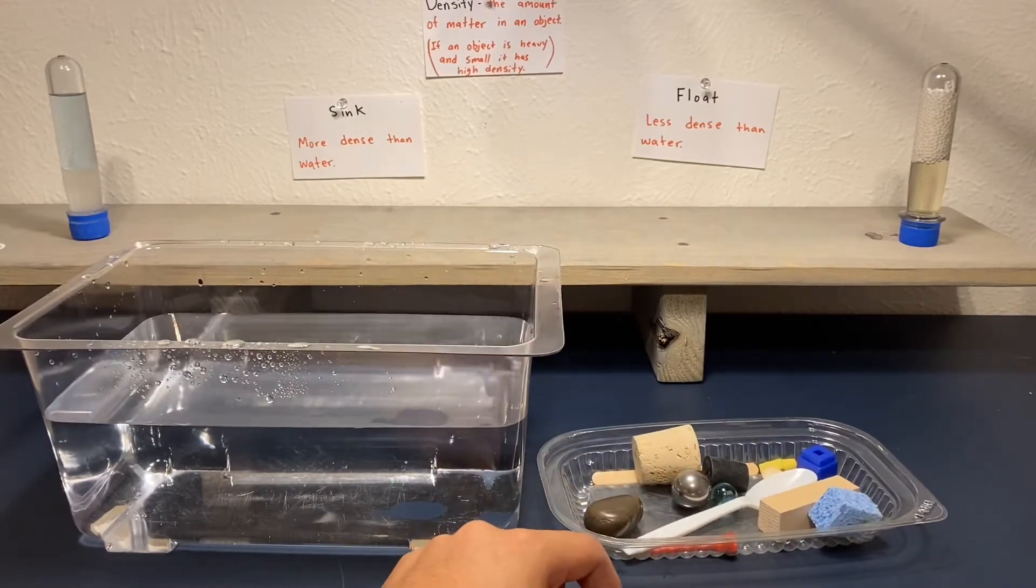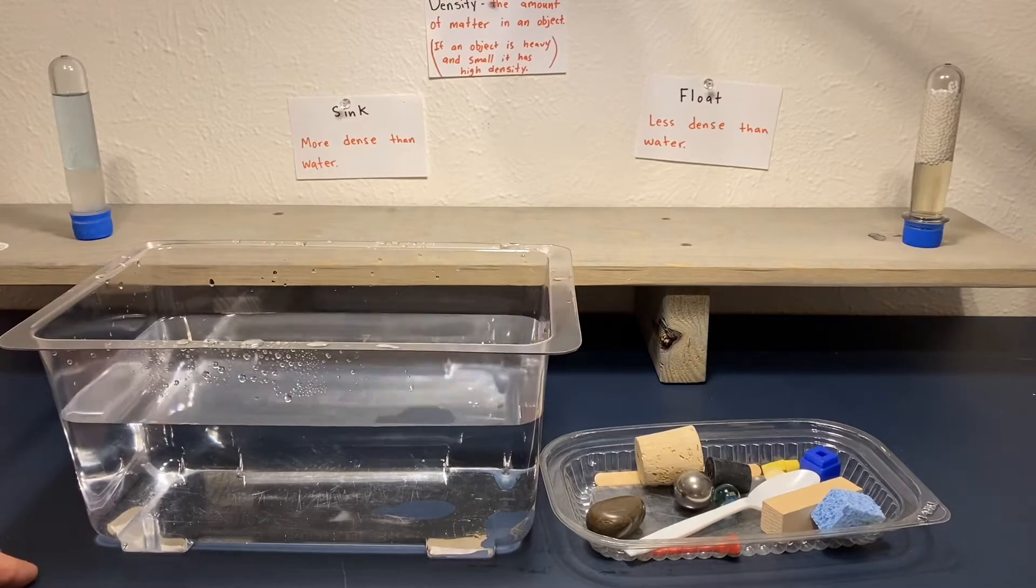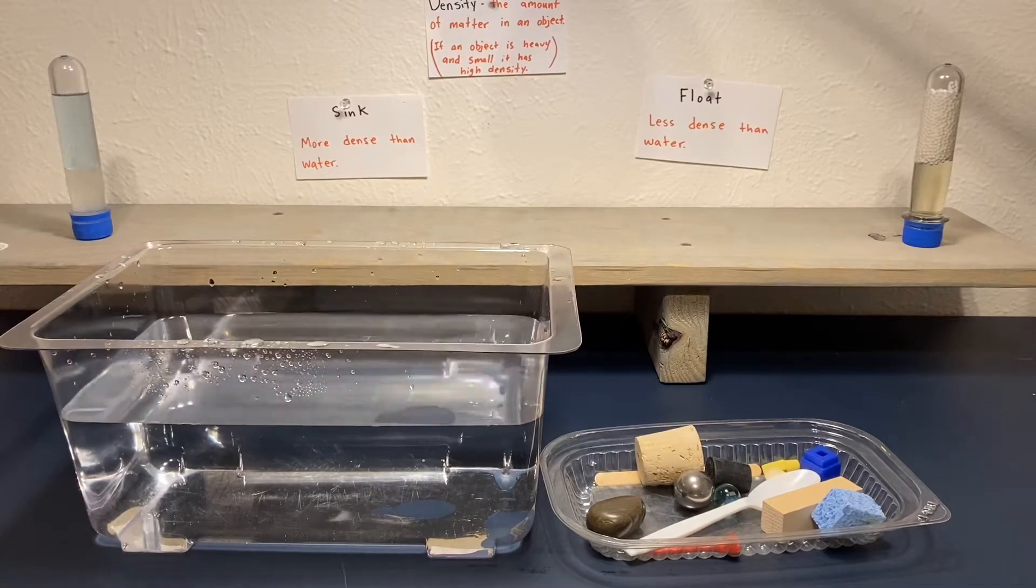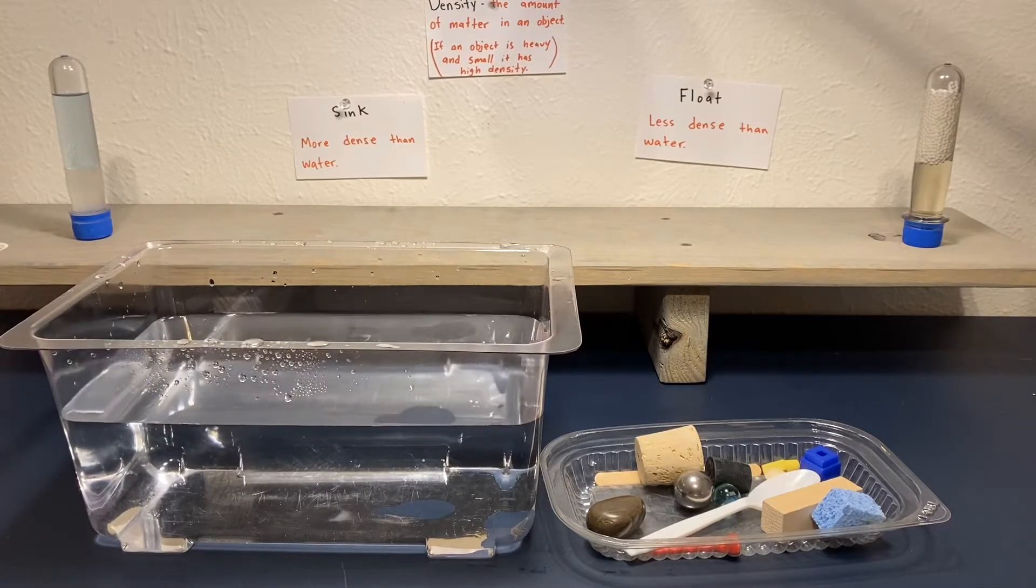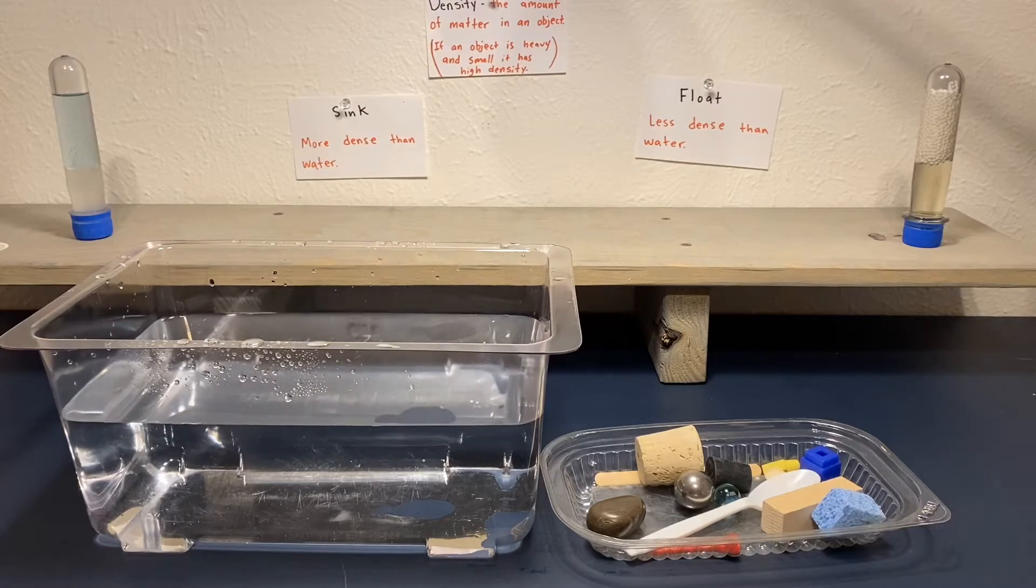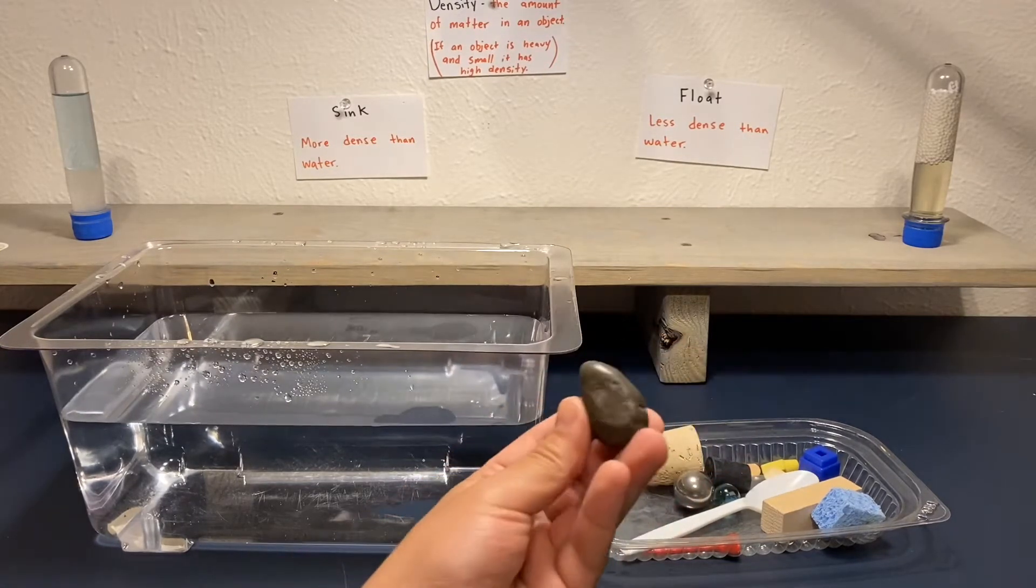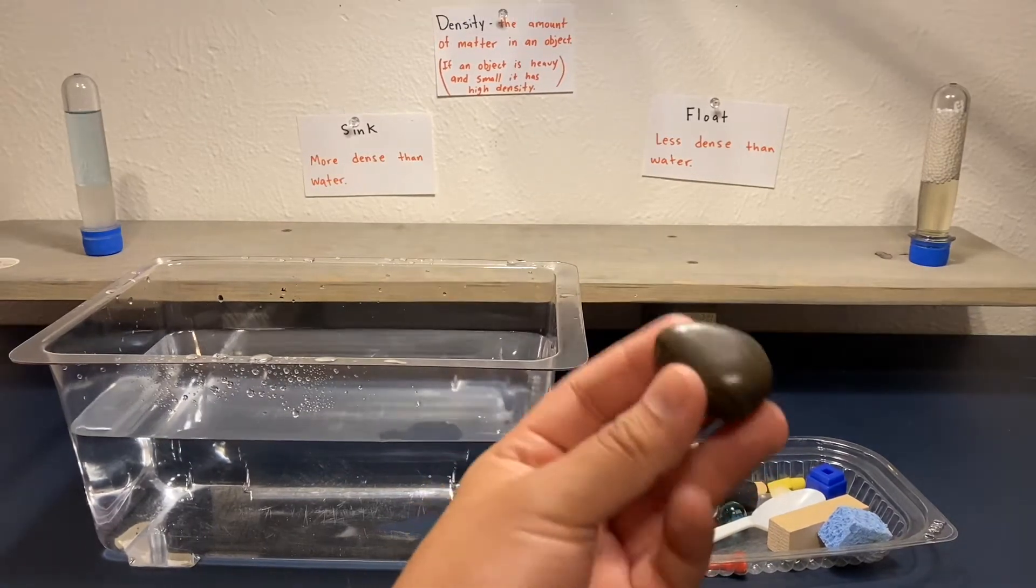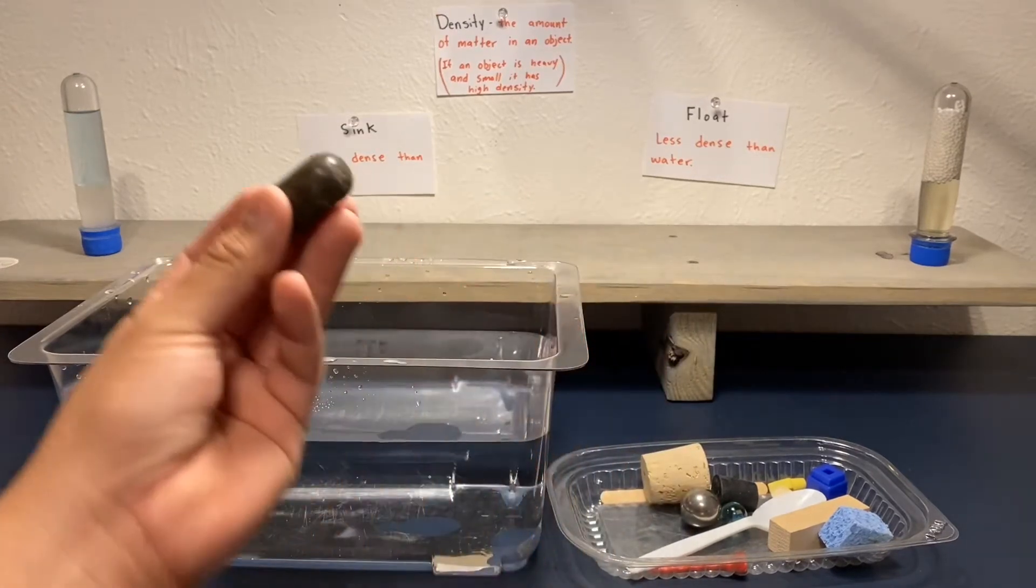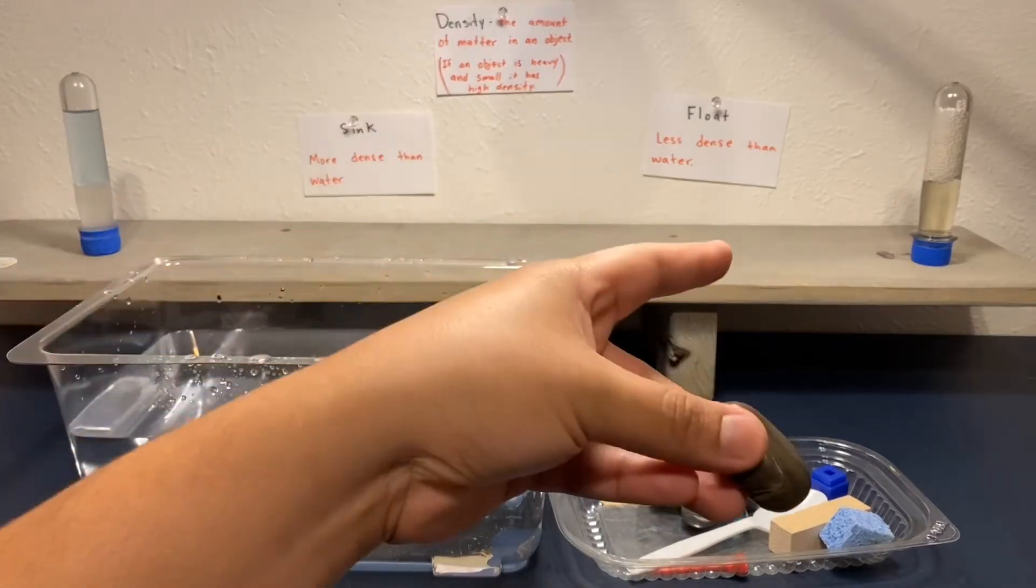At this time, go ahead and make your predictions. Write down in your journal the chart, your predictions, what you think is going to happen. Let's start off with the rock. Do you think it's going to be more dense than water or less dense than water?